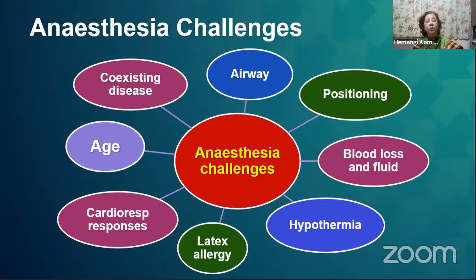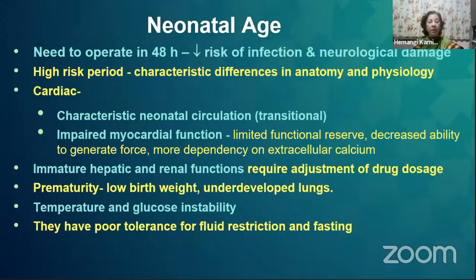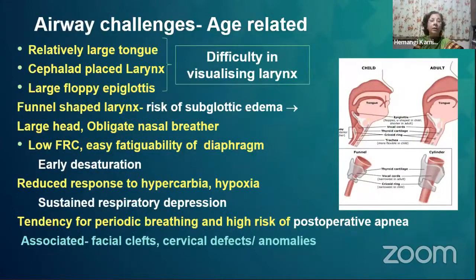Anesthesia challenges are manifold. Apart from age-related issues, there are coexisting diseases, airway-related issues, positioning, blood loss, hypothermia, latex allergy, and the patient's cardiac responses. Because of the neonatal age group, this is inherently a high-risk group due to obvious differences in anatomy and physiology. They can have characteristic transitional circulation, impaired myocardial function, immature hepatic and renal function, and underdeveloped lungs in premature babies. Their temperature and glucose instability are very high, and they have poor tolerance for fluid restriction and fasting. The typical neonate has distinct airway differences from older patients: relatively large tongue, cephalad larynx, and large epiglottis.